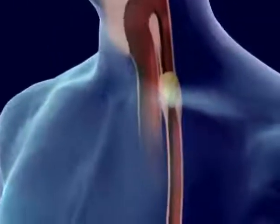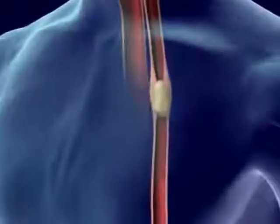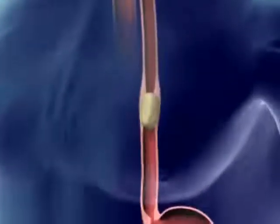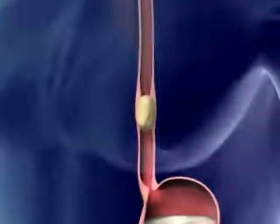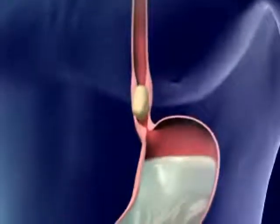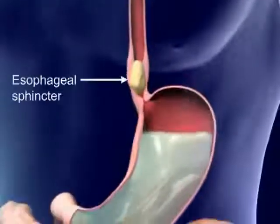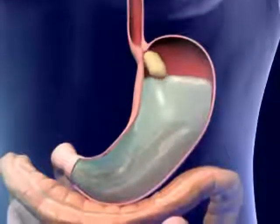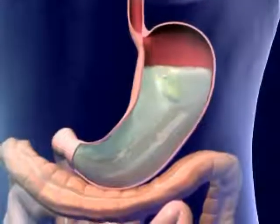Food goes from the pharynx to the esophagus and moves down the esophagus by peristalsis. The peristaltic wave reaches the esophageal sphincter and food enters the stomach.